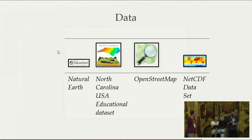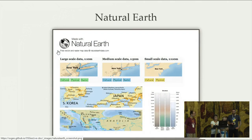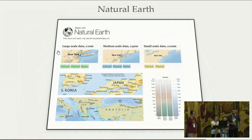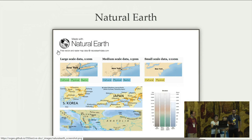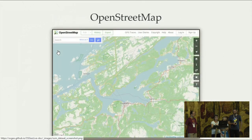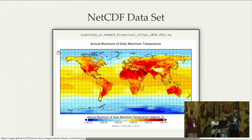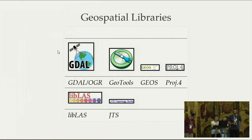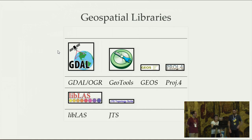We have a lot of data you can use in workshops, so you don't have to add your own data. We have Natural Earth data with data from all around the world — political areas and raster data. We also have a North Carolina educational dataset, OpenStreetMap data, and NetCDF data with temperature and other information. For libraries, we have GDAL/OGR, GeoTools, GEOS, PROJ5, libLAS, and JTS.